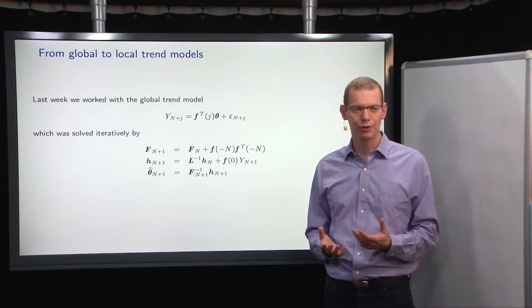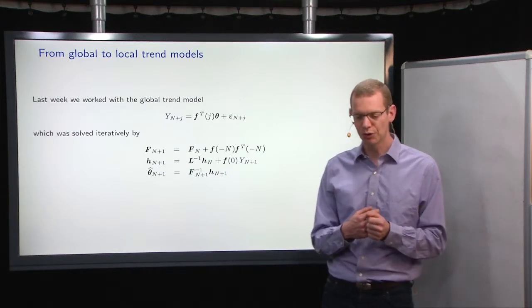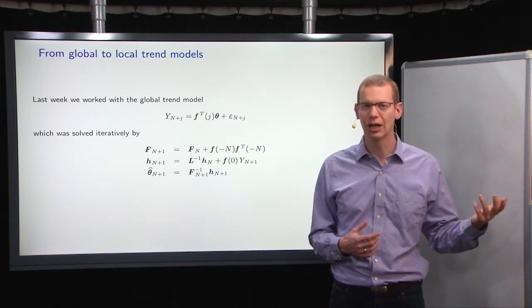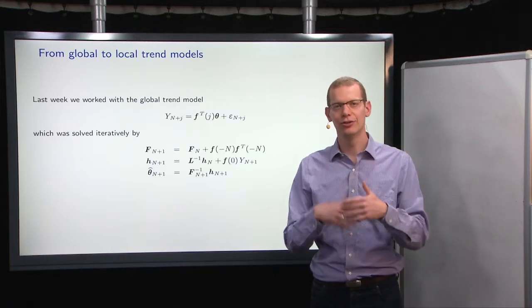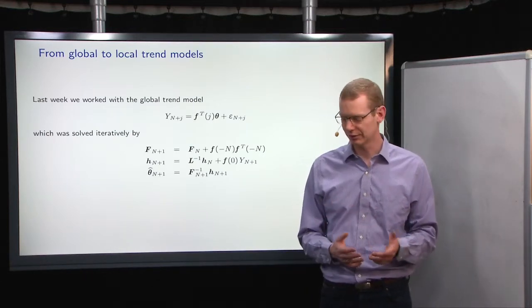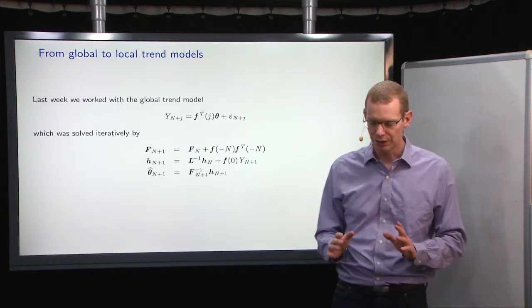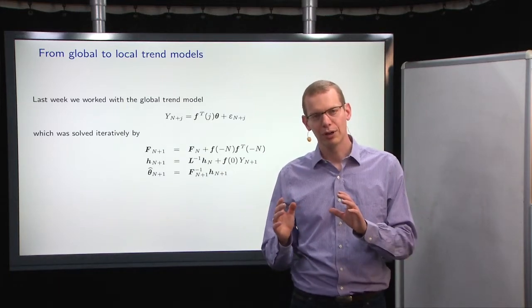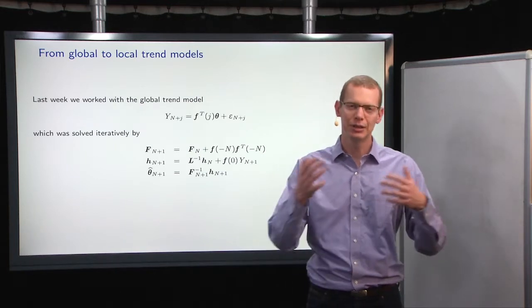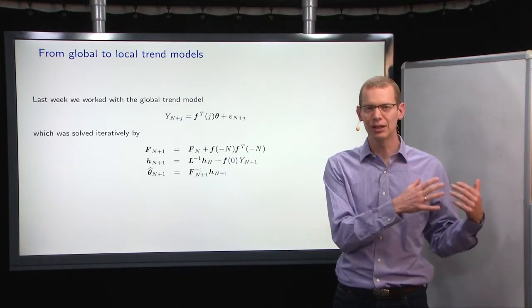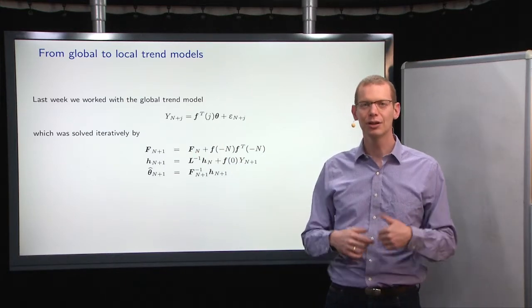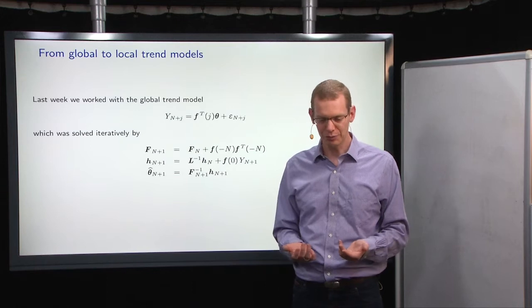So, what else could we do rather than just using exponential smoothing? What we looked at previously was to have some global trend models, and that is just a reformulating of the classical linear regression model. But what if we want to take the same idea that we did for the exponential smoothing as a mean to calculate a running mean value instead of calculating a global mean value? Can we do something similar for the trend models?